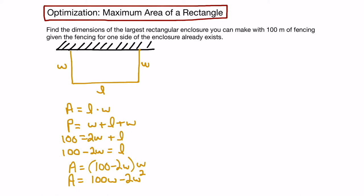A couple of things to note about our area function: it's a parabola because it's of degree 2, and it opens down because there's a negative coefficient for that term. So if we were to sketch the graph really quickly, it would look something like this.